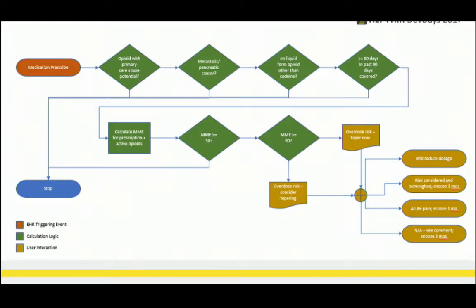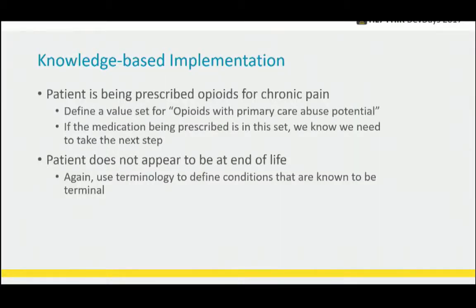For the first condition — patient is being prescribed opioids — we define a value set for opioids with primary care abuse potential, then look in their medication list. If they have any that are in this list, then they're in that case. For patient does not appear to be end of life, we're using terminology to define the conditions we're looking for. It's not a perfect match, but there's a lot of sensitivity around figuring out when a patient is at end of life. You don't want to ask the provider every time, so you try to infer it — but it's not a perfect fit.